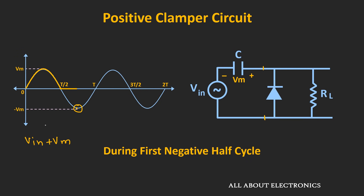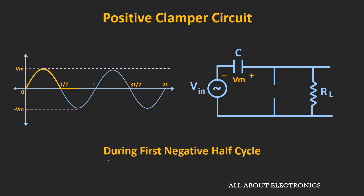After this point, as Vin is going from minus Vm to zero volt, this voltage will be always greater than zero. So the cathode of the diode is more positive than the anode — meaning after this point, this diode will act as an open circuit. Then the output voltage Vout can be given as Vin plus Vm. So whenever Vin is equal to minus Vm, the output will be equal to zero; and whenever Vin is equal to zero, the output voltage will be equal to Vm. During this time, the output will look like this — this portion of the waveform will get DC shifted by Vm volts.